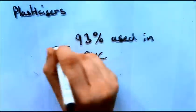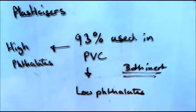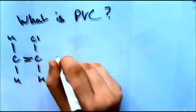But where do we come into contact with phthalate plasticizers? 93% of plasticizers are phthalates. They are used in the production of PVC products.